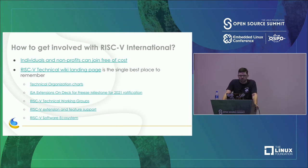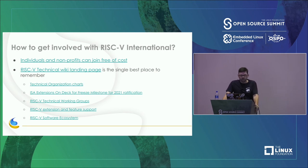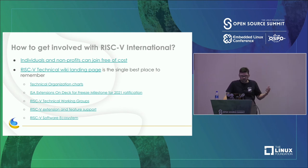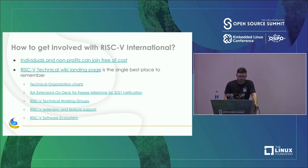There are a lot of different specs and new extensions being proposed. I highly recommend getting involved in RISC-V International — you can join free as an individual or nonprofit. Once you sign up, there's a technical wiki landing page which is the best single place to find links to different things: the technical organization chart, ISA extensions on deck for freezing and ratification, different technical working groups, and the software ecosystem.